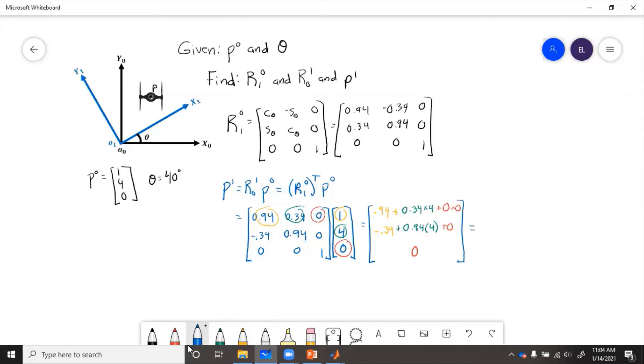So then if we do those additions, then we end up with 2.31, 3.41, 0 equals P1.